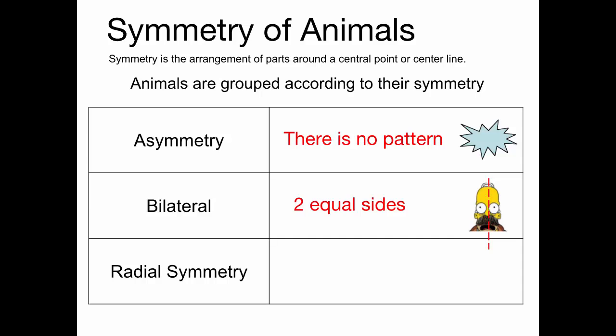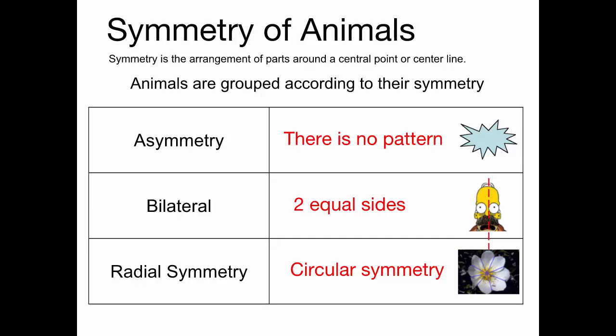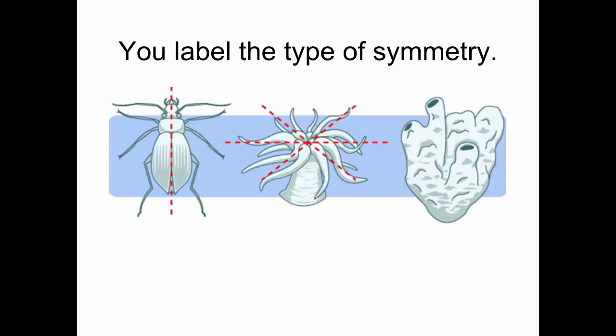Radial symmetry is circular symmetry — when an organism has its parts arranged in a circular pattern. The petals of a flower show radial symmetry. Usually in radial symmetry, several lines could be drawn splitting the organism into equal parts. A beetle has bilateral symmetry, a sea anemone has radial symmetry with tentacles coming out from a central point like spokes on a wheel, and a sponge has asymmetry.